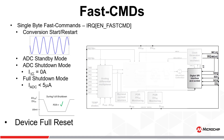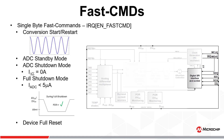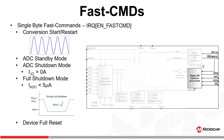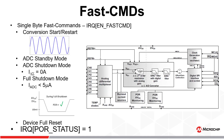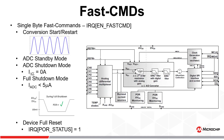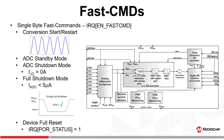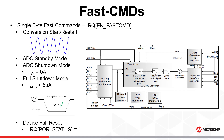The device full reset fast command resets the entire register map of the ADC to its default POR state, including non-writable registers such as the ADC data register. Therefore, if the application requires the ADC data register to be cleared, a device full reset fast command is the only means to achieve this during normal operation. The only difference between a POR event and a device full reset is that the POR status bit in the IRQ register is set to 1 after a full reset and reset to 0 after a POR event, allowing the application to distinguish between the two.